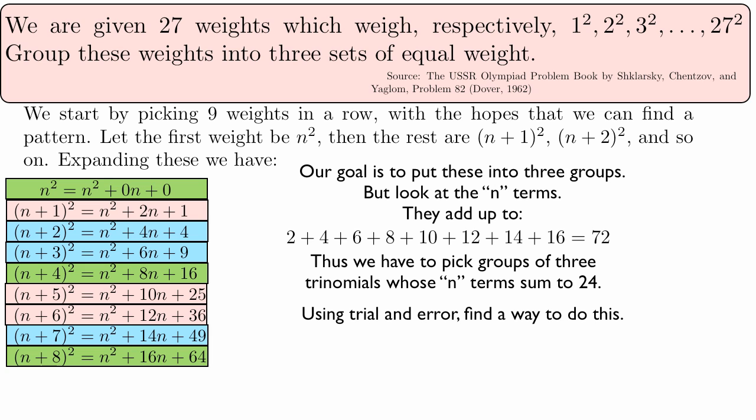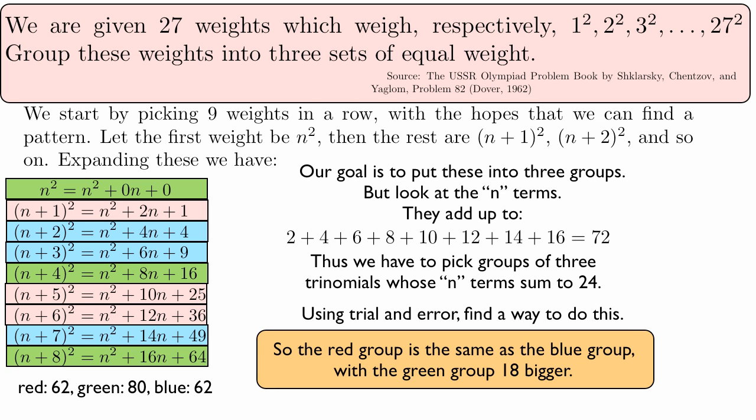Are they all equal? Well, it turns out no, because the constant terms differ when we add those up. The red group has constant terms adding up to 62, and same thing with the blue group. But the green group has constant terms adding up to 80. So we have two groups that are the same size. The red group is the same as the blue group, but the green group is 18 bigger.